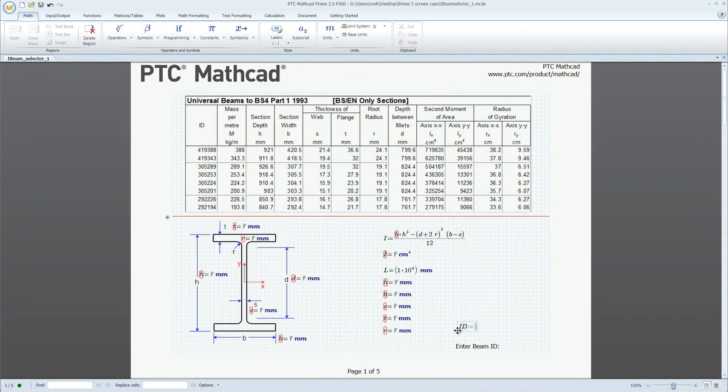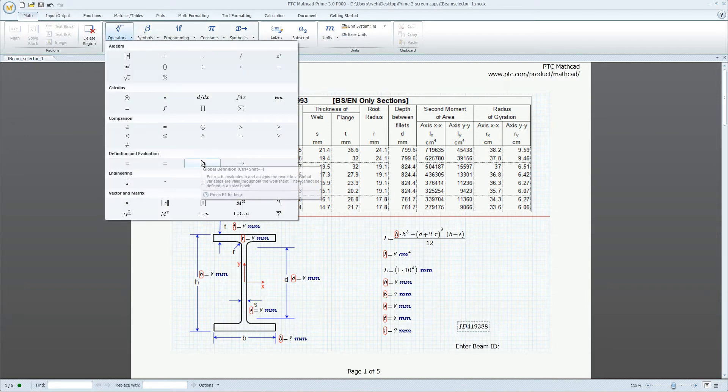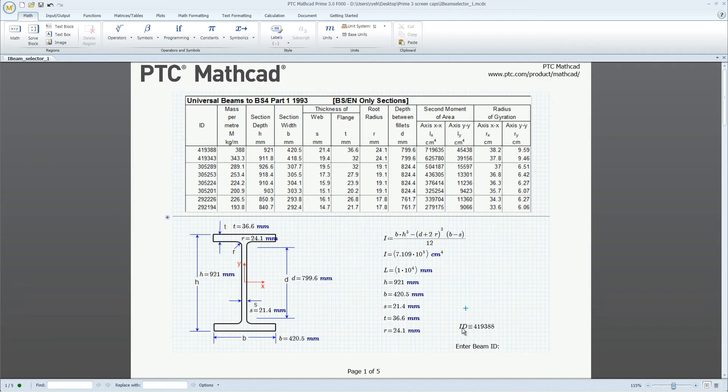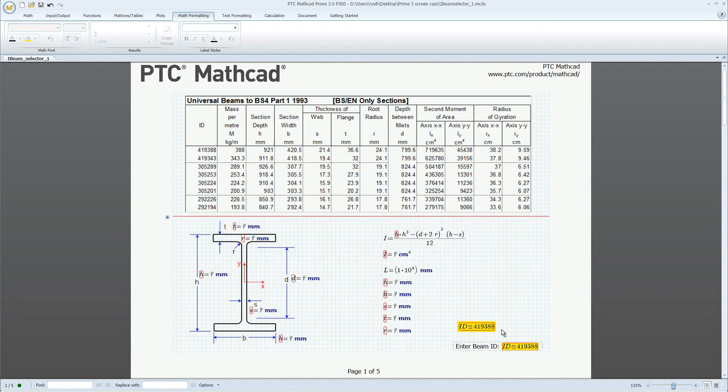Variable definitions are the backbone of your worksheets. Some variables are specific to individual calculation steps, and some will be utilized throughout the worksheet. Global definitions allow you to define and evaluate a variable anywhere in your worksheet without having to worry about calculation order. This makes both worksheet management and documentation presentation easier.